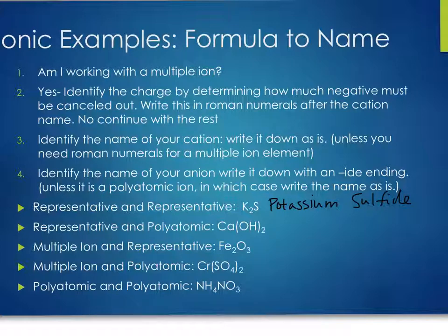When you see two capital letters next to each other in a formula, you're likely working with just two elements. But if there are three, four, five, or six capital letters, check your polyatomic ion chart. For Ca(OH)₂: calcium is in group two — not a multiple-ion element — so just write calcium. OH is on the polyatomic ion chart, so always write the name as-is: calcium hydroxide.